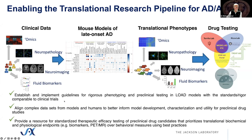To summarize, we establish and implement guidelines for rigorous phenotyping and preclinical testing laid out to the models. We're modeling these on clinical trials, not academic research. We're aligning complex data sets from models to humans to better inform model development, characterization, and utility for preclinical drug studies. Essentially, one goal of this talk is showing we're providing resources for standardized therapeutic efficacy testing of preclinical drug candidates. Based on NIA's guidance, we're focused largely on the pharma/biotech audience, though obviously these models will be very important for academic research as well.